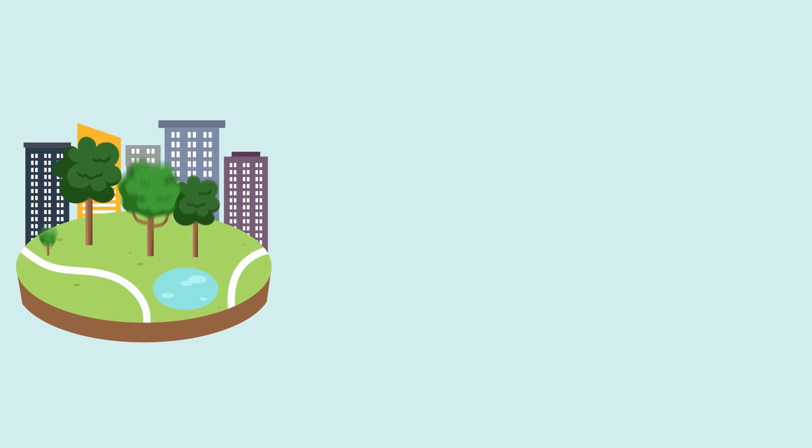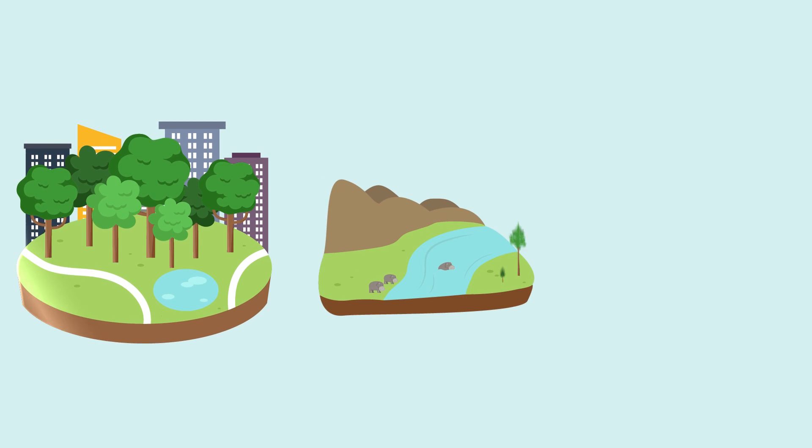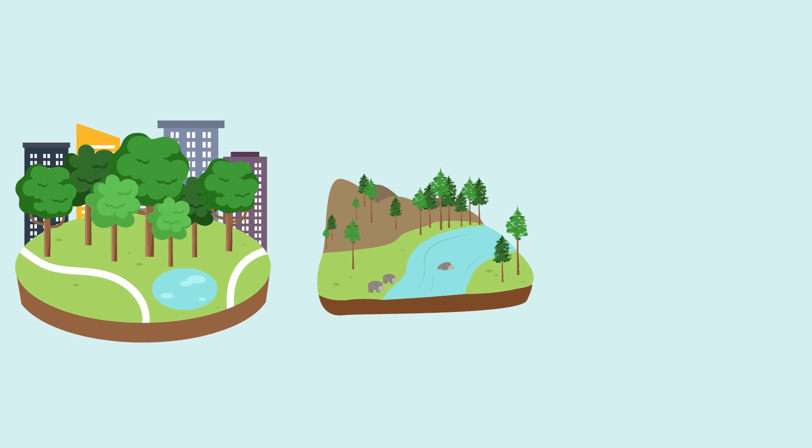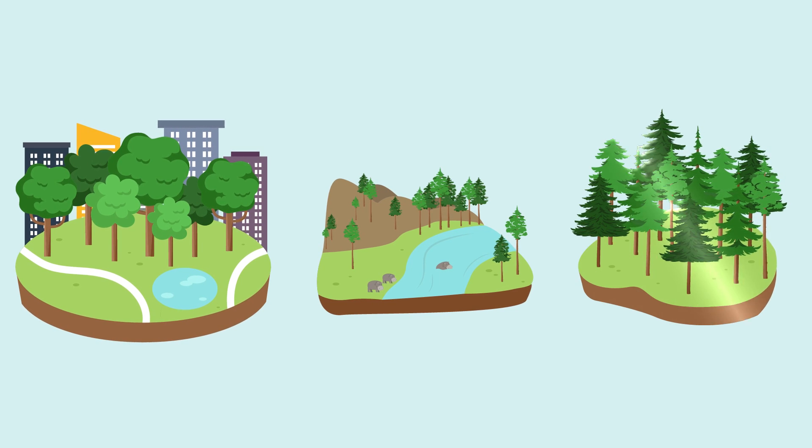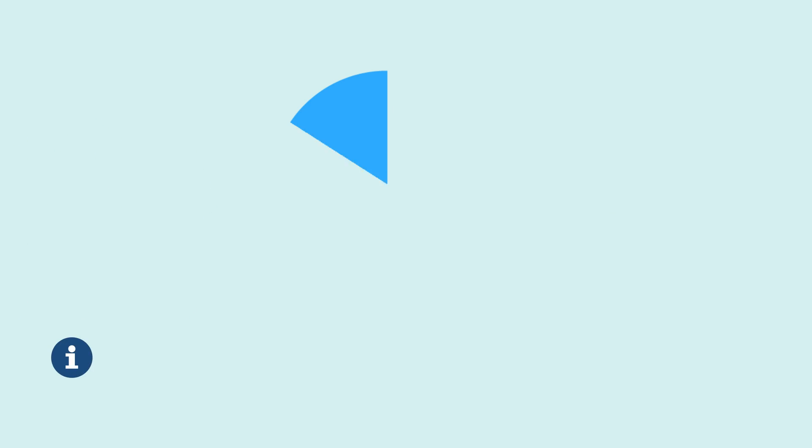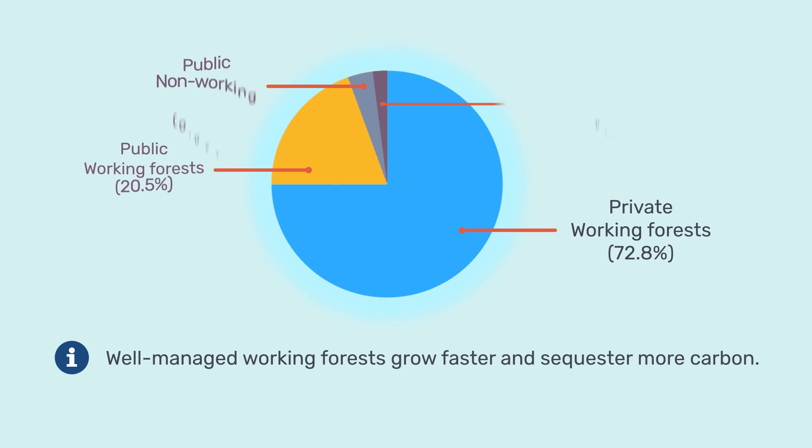There are many types of forests, and they all play a part in capturing carbon. Private working forests, when trees are planted and replanted for their timber, play the largest role of all, accounting for about three-quarters of the carbon sequestered in America's forests every year.